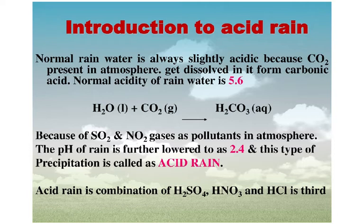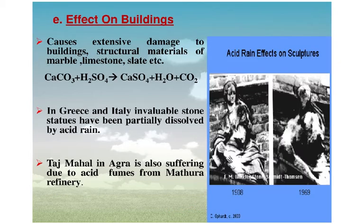The normal acidity of rainwater is pH 5.6 from the reaction of water with carbon dioxide. Because of SO₂ and NO₂ as pollutants in the atmosphere, the pH of rain is further lowered to as low as 2.4, and this type of precipitation is called acid rain. Acid rain is a combination of H₂SO₄, HNO₃, and HCl. It causes extensive damage to building materials such as marble, limestone, and slate.